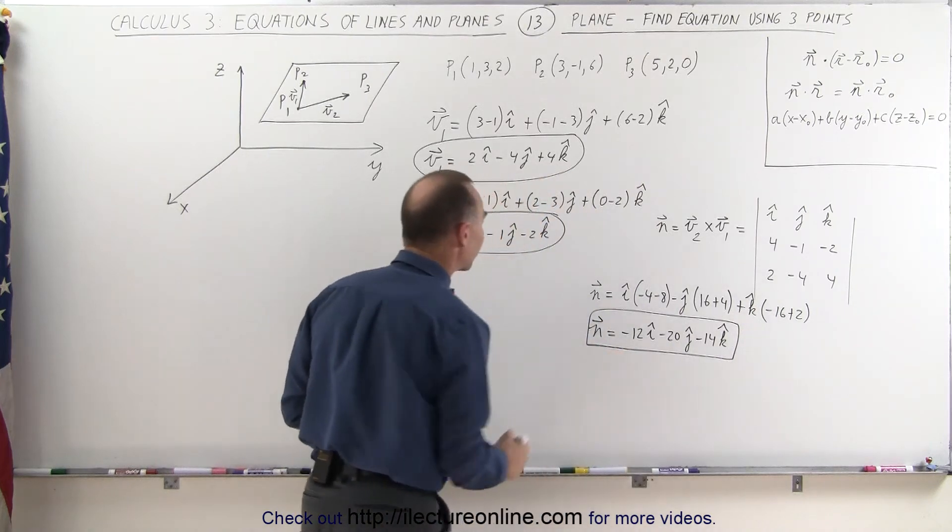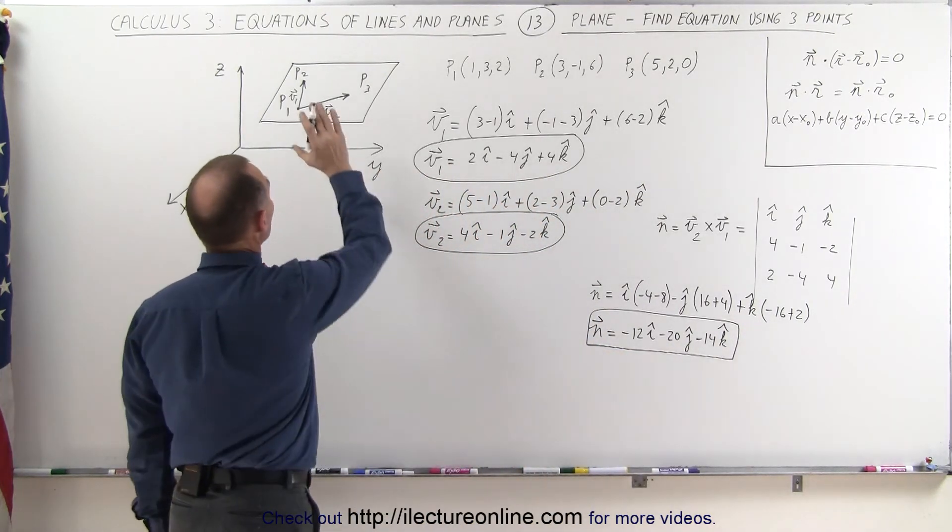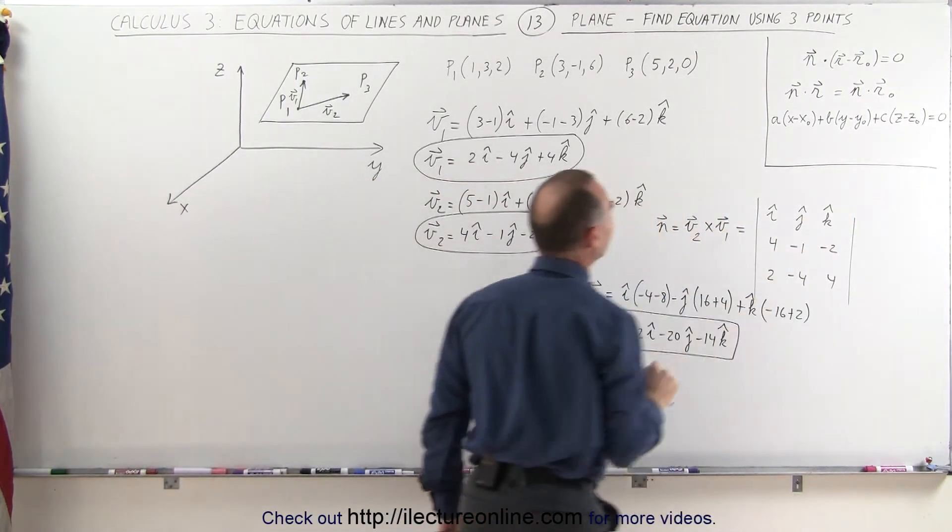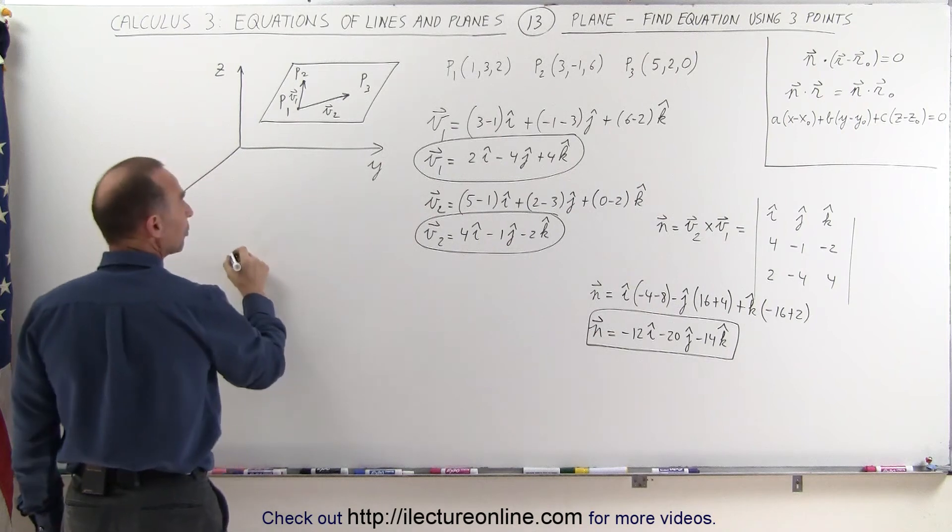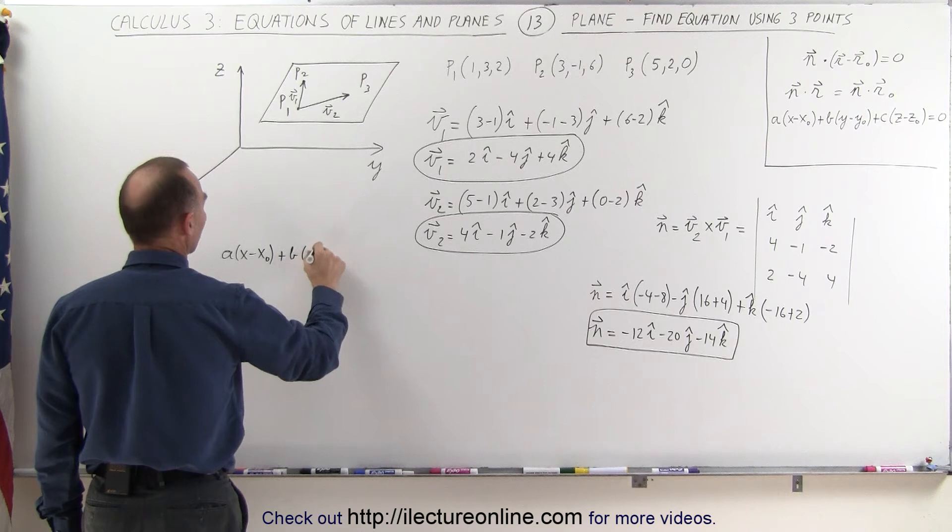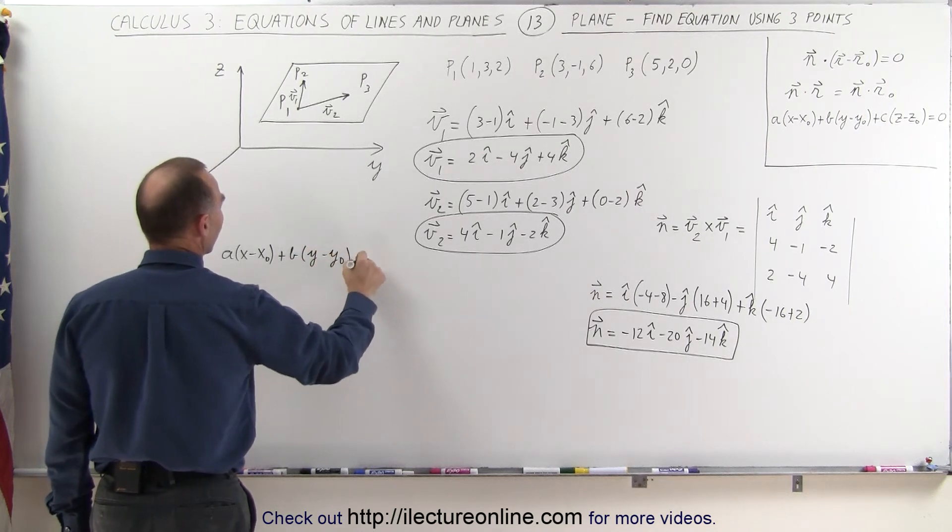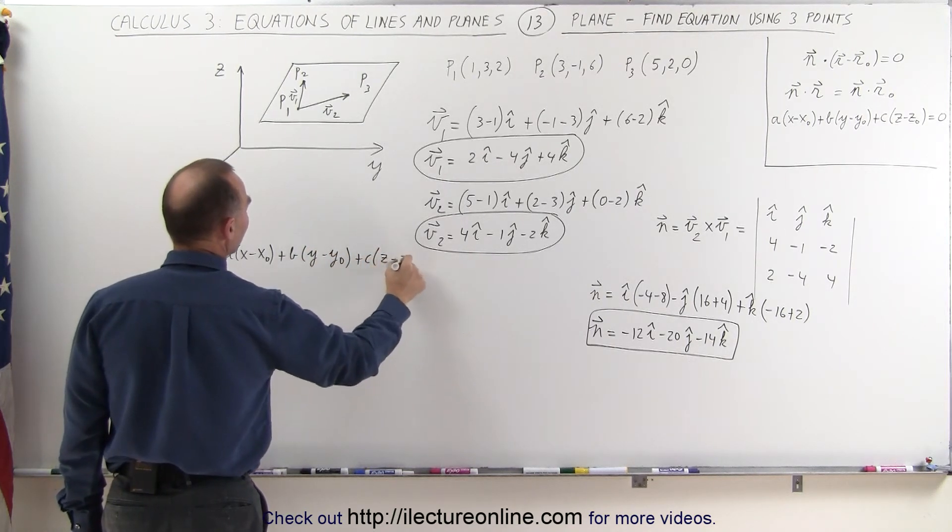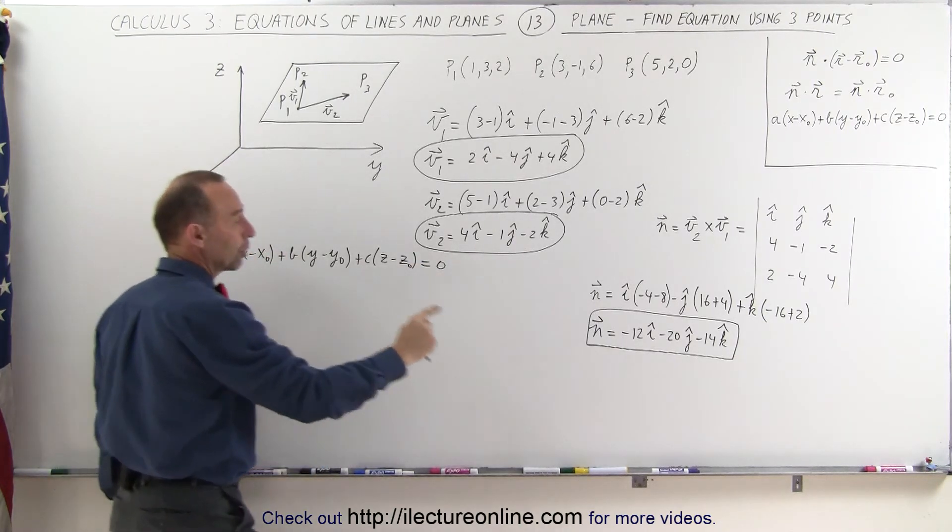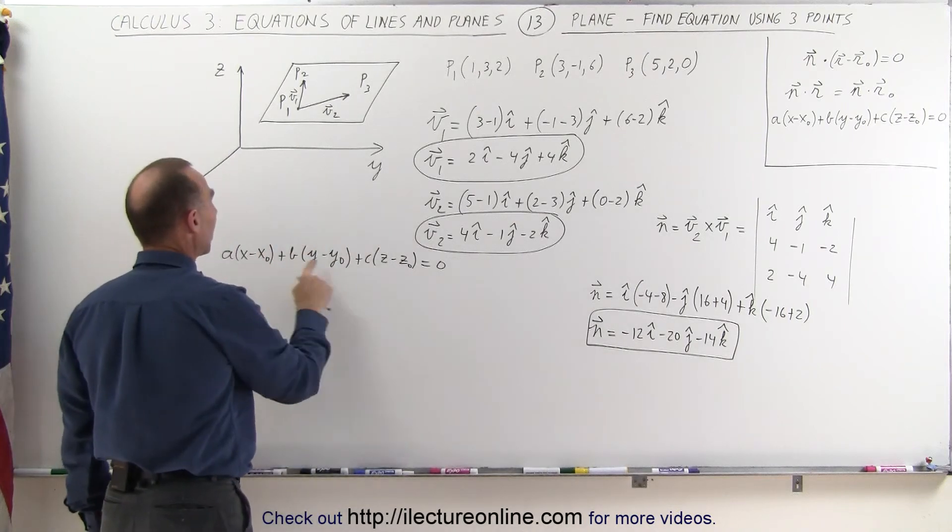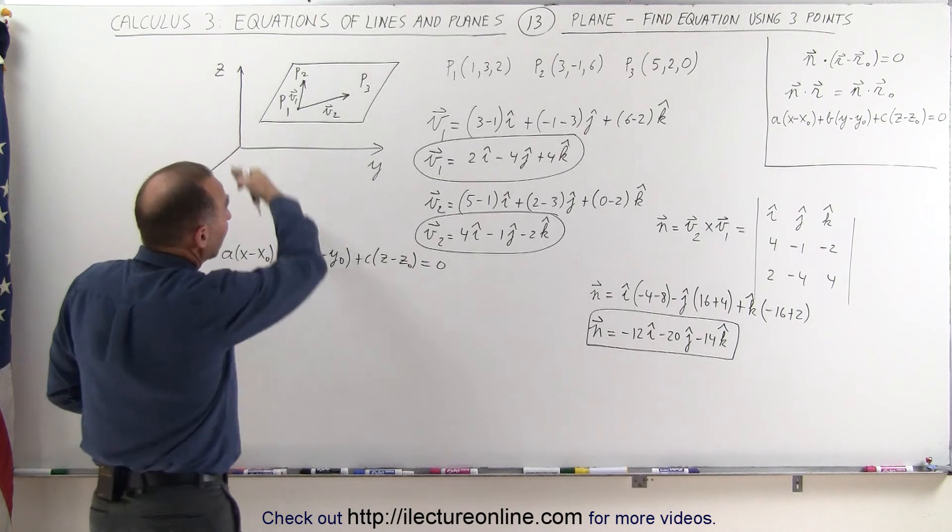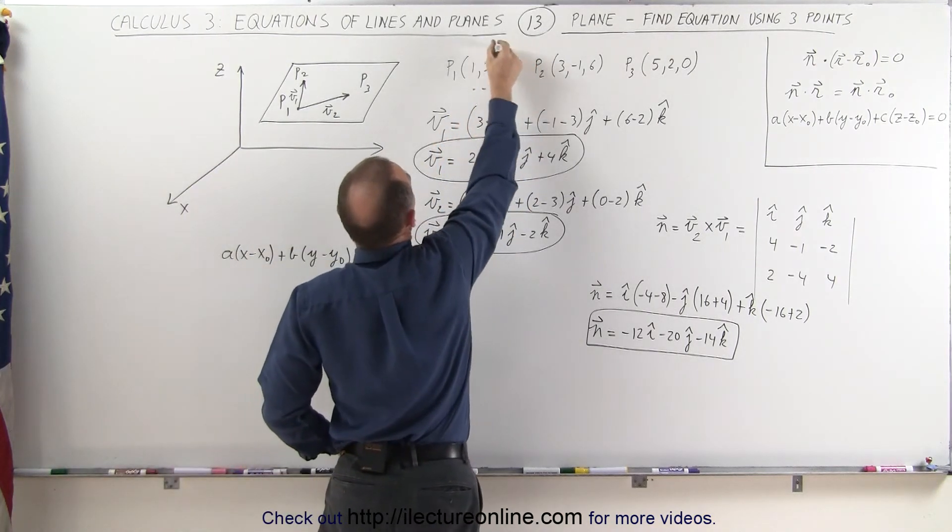Now that I have my normal vector, I'm now ready to come up with the equation to describe that plane. For that, I need to have this equation right here, which means I will use a times (x minus x₀), plus b times (y minus y₀), plus c times (z minus z₀), and that equals 0. Now remember that a, b, and c are the components of the normal vector. x₀, y₀, z₀ would be any point on the plane, and I can pick any of those points, so I'll just go ahead and pick point number 1.